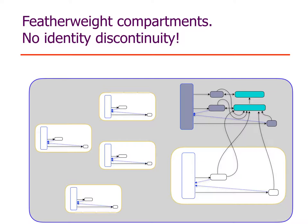SES does two things: it freezes all the primordials and it introduces a new API for creating a compartment. A compartment — shown here as the yellow boxes — are environments that are technically realms in the sense of an execution environment with its own global scope. Each one has its own global object, and that's the way in which compartments are able to give different modules different global variables because they're executing with different global objects. Each compartment also has its own evaluators.